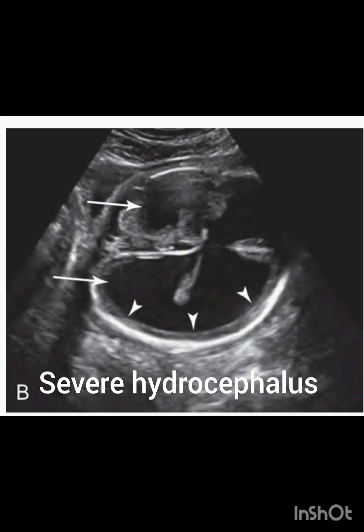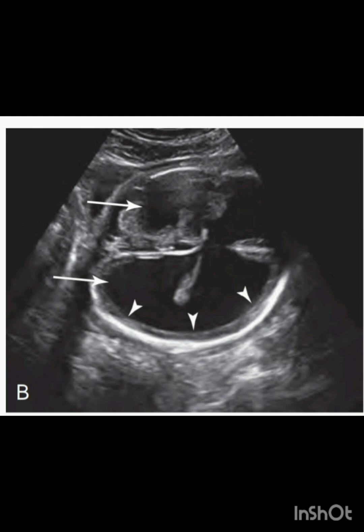How do you differentiate severe hydrocephalus from hydranencephaly? In this image of severe hydrocephalus you can see a thin rim of maintained cortical tissue indicated by the arrowheads. In hydranencephaly there is no cortical tissue. I really hope you like this video — please subscribe to my channel and I'll come up with more such interesting content. Thank you.